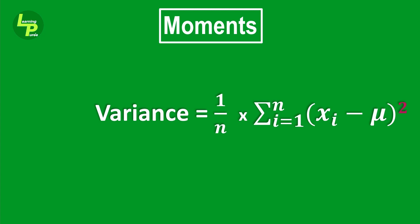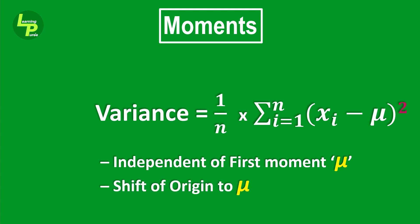We were successful in making the second moment independent of the first moment by removing the effect of the first moment. We achieved this by shifting our frame of reference from the origin to that of the first moment or mean denoted by μ.